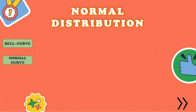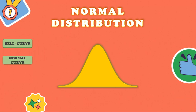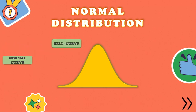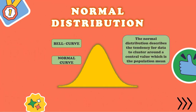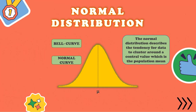So what is normal distribution? It is a special type of density curve that is bell-shaped. For this reason, the normal distribution is sometimes called the bell curve or the normal curve. Furthermore, this describes the tendency for data to cluster around a central value, which is the population mean, located at the middle of the curve. The mean, median, and mode are equal at the center, while the tails of the curves are asymptotic to the horizontal axis. The normal distribution and its shape actually arises from many different variables found in nature.